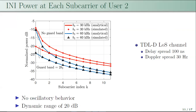For INI power at user 2, the simulation setup and parameters are the same. Again the INI power exhibits a wide dynamic range of 20 dB, and the presence of a guard band reduces INI power. Subcarriers close to the interfering numerology experience higher INI power. Unlike user 1, the INI power at user 2 does not have an oscillatory nature — it monotonically decreases as the subcarrier index increases. The explanation for the presence and absence of this oscillatory nature is given in our ICC paper.